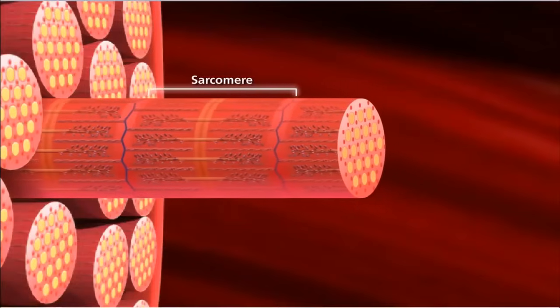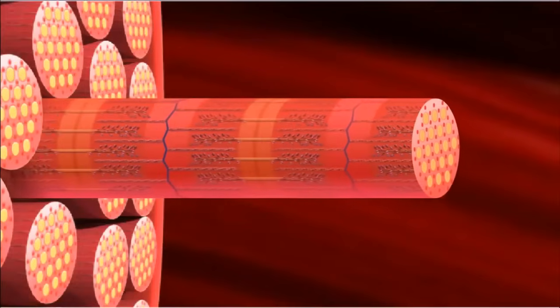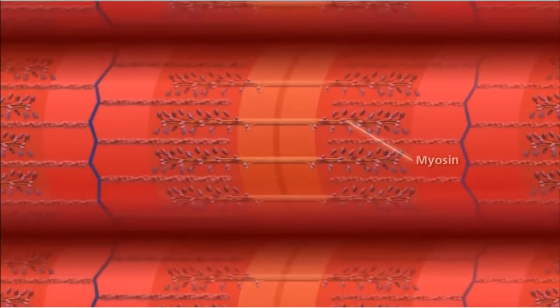The muscle contracts when these filaments slide past each other. The thick filaments are myosin, which are anchored at the center of the sarcomere, called the M-line.